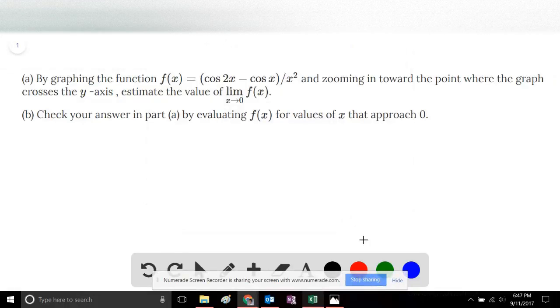This is problem number 29, Stewart Calculus 8th edition, section 2.2, Part A. By graphing the function f(x) = (cos(2x) - cos(x))/x² and zooming in toward the point where the graph crosses the y-axis, estimate the value of the limit as x approaches 0.